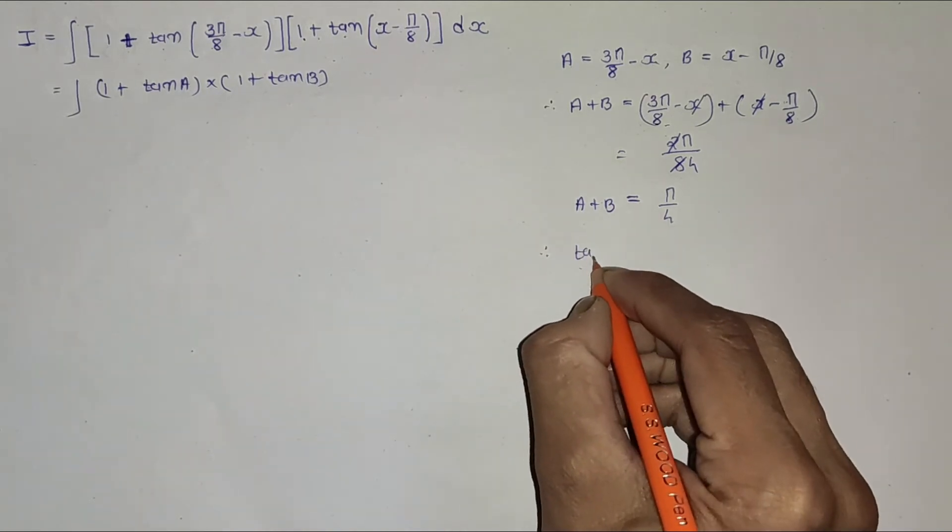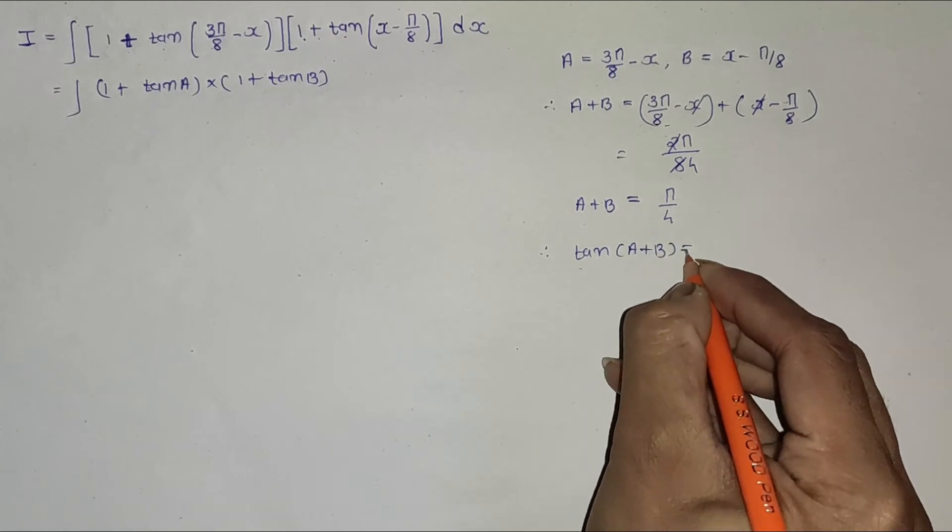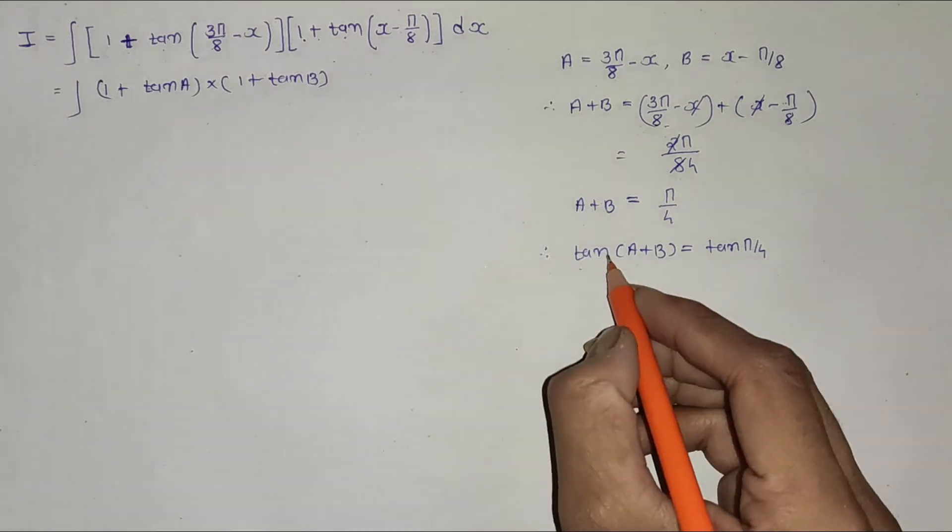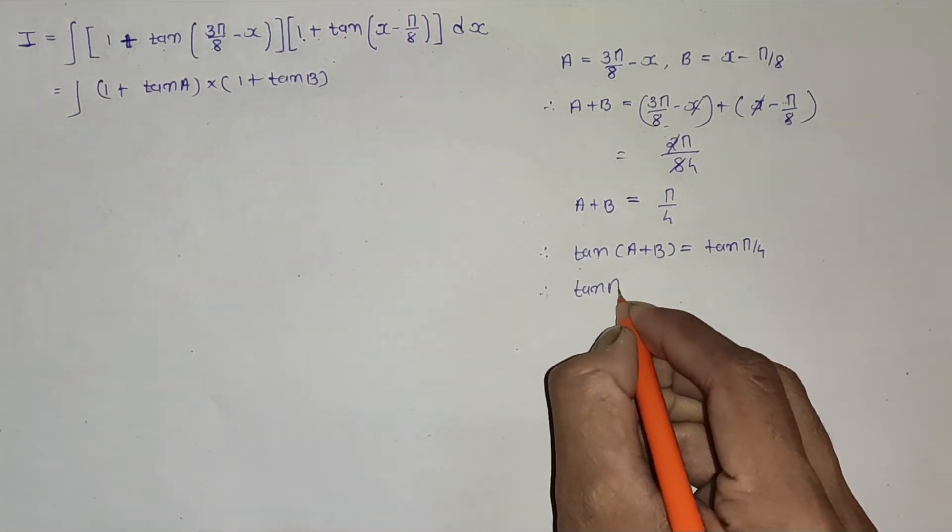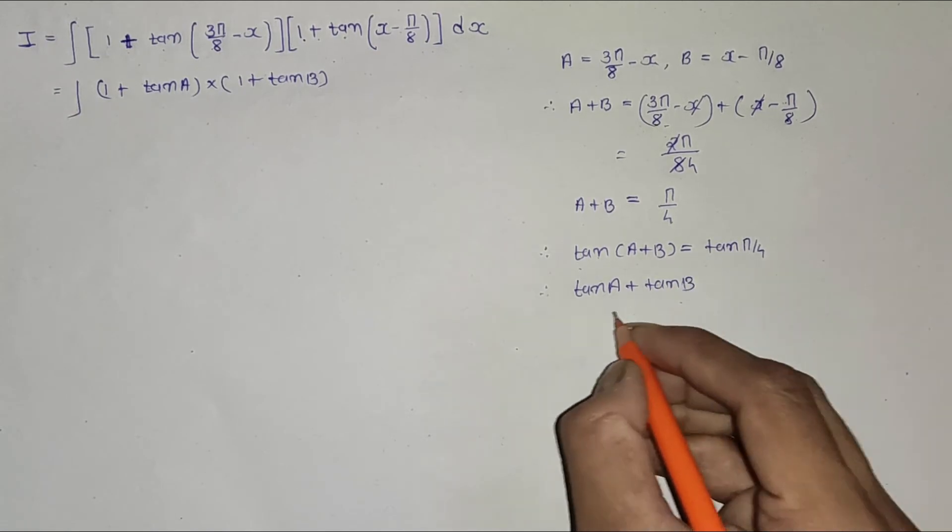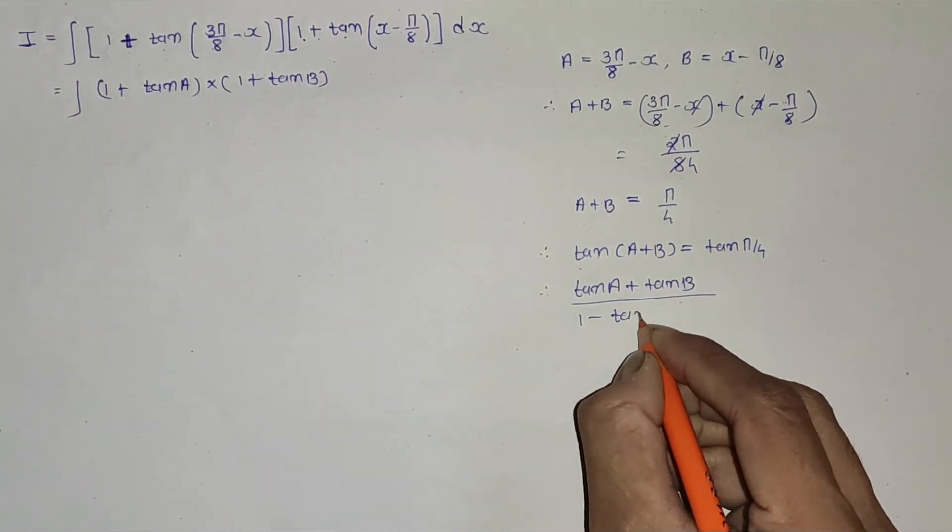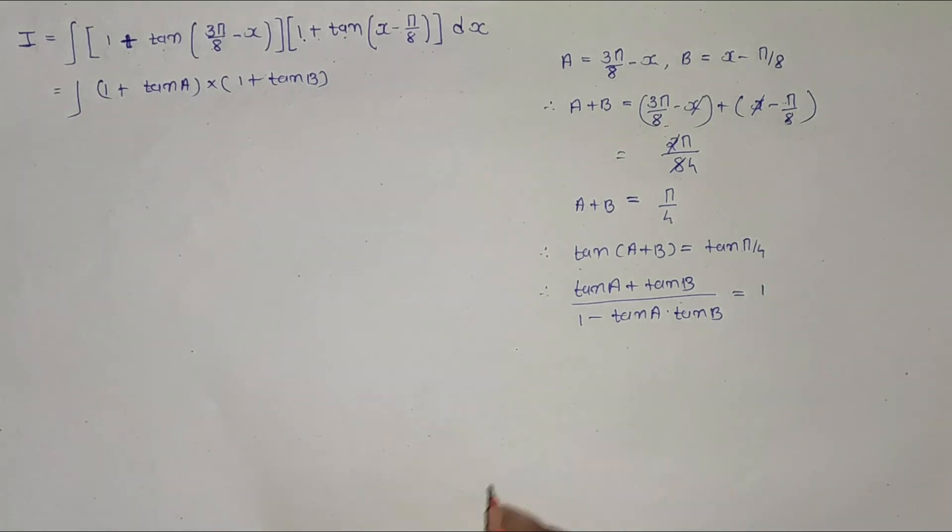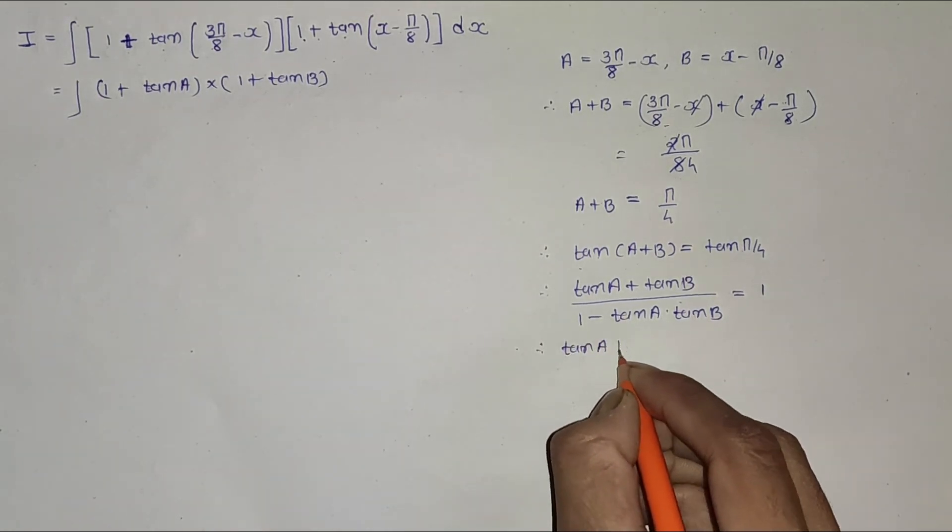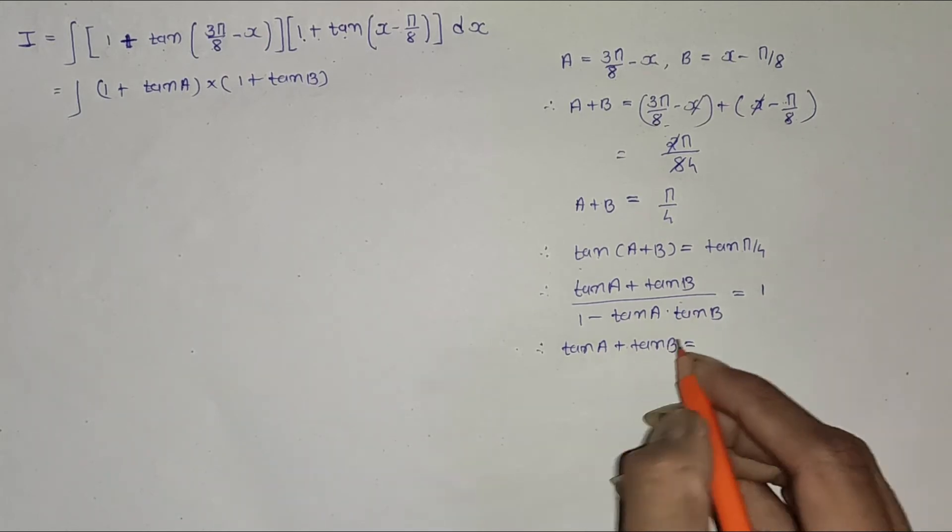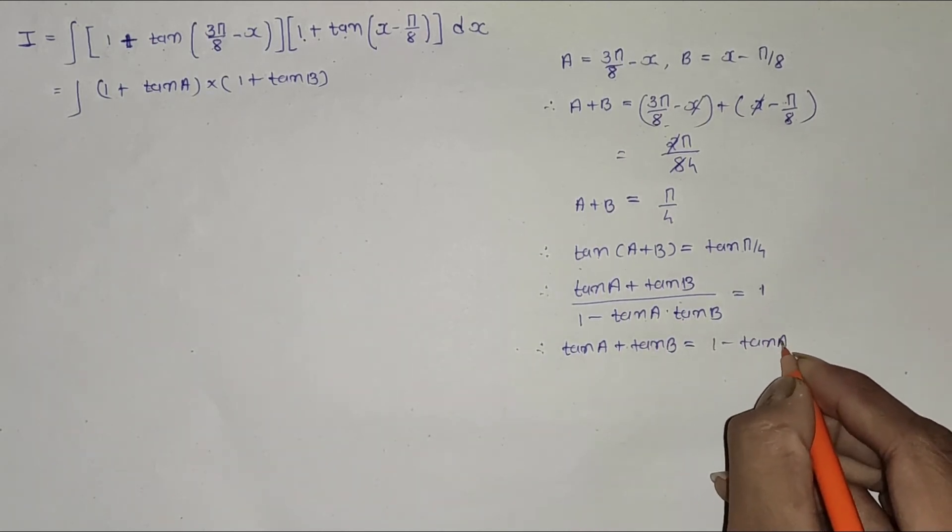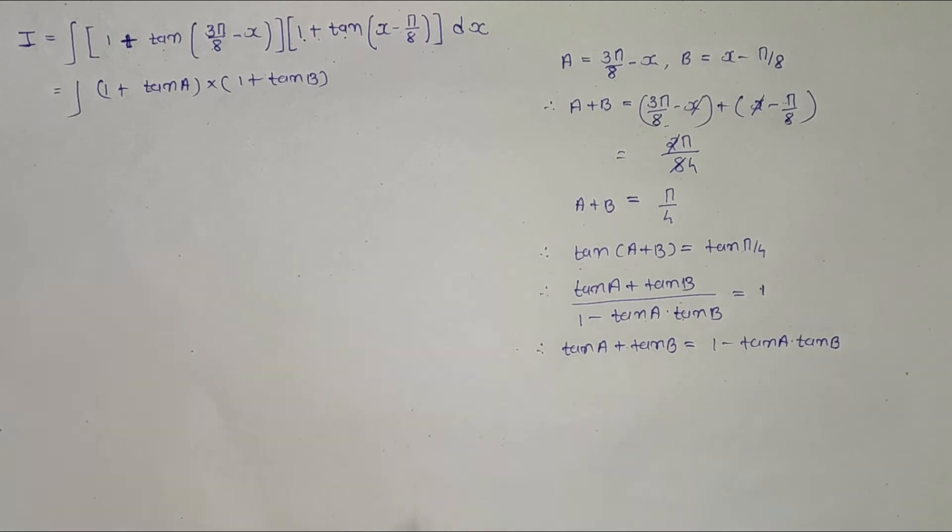Then tan(a + b) equals tan(π/4). Now apply the rule of tan(a + b), that is (tan a + tan b)/(1 - tan a · tan b) equals tan(π/4), which is 1. Therefore, tan a plus tan b equals 1 minus tan a · tan b.